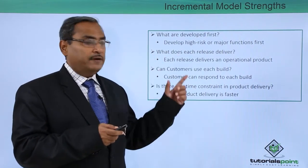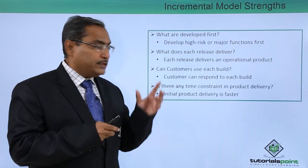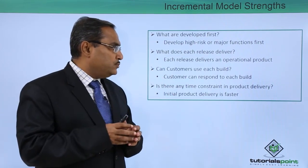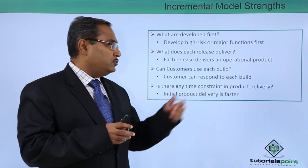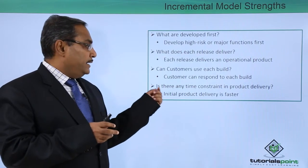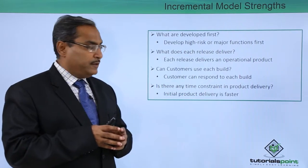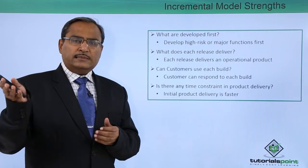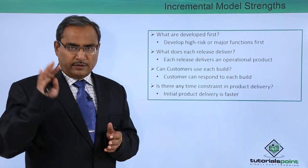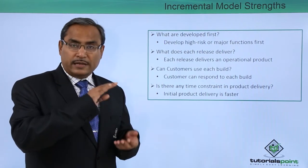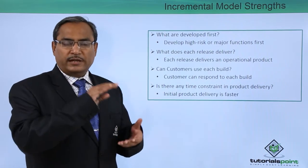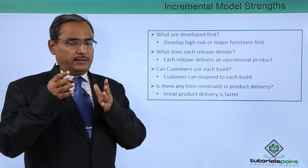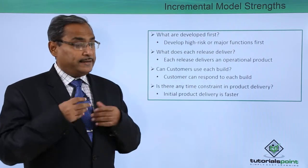What does each release deliver? Each release delivers an operational product so that the client can use it. Can customers use each build? Customers can respond to each build. Is there any time constraint in product delivery? Initial product delivery is faster — if release three is the final delivery, the client already has release one and release two available prior to final delivery, so the client can use the software before the final product is delivered.